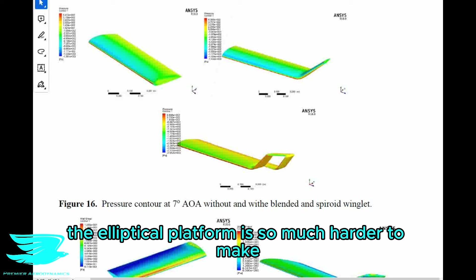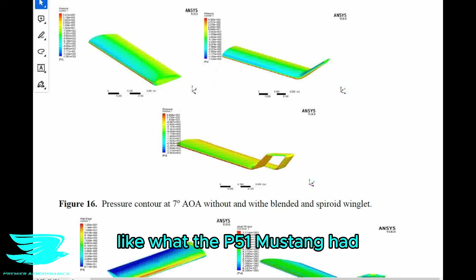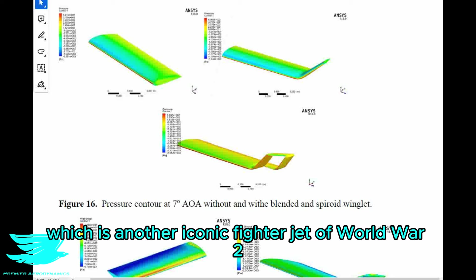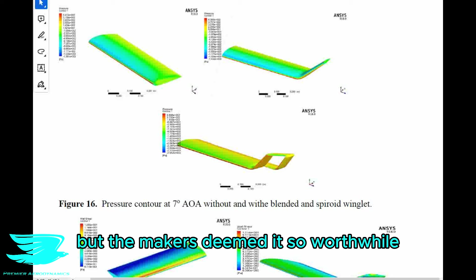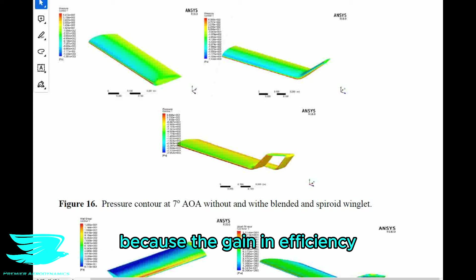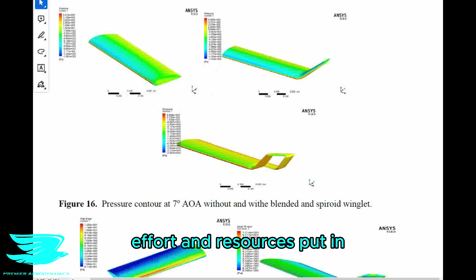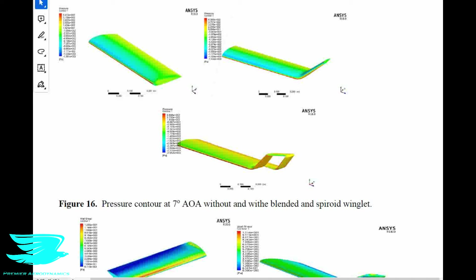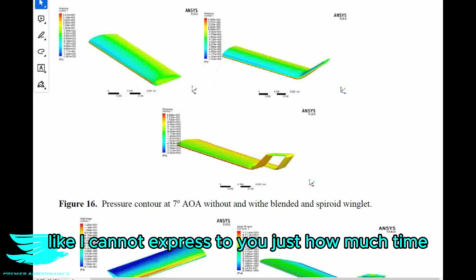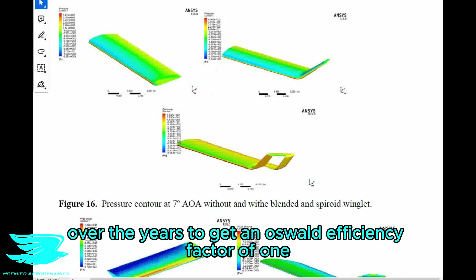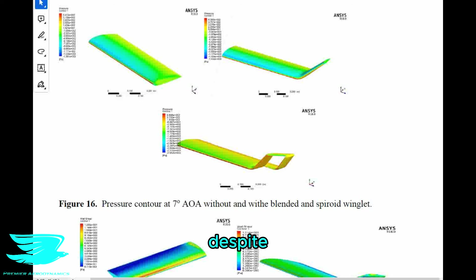The elliptical planform is so much harder to make than a straight one, like what the P-51 Mustang had — which is another iconic fighter jet of World War II. But the makers deemed it so worthwhile, because the gain in efficiency due to the lower induced drag was worth the time, effort, and resources put in to get an elliptical planform — or more accurately, an elliptical lift distribution. I cannot express to you just how much time, effort, and resources were put in over the years to get an Oswald efficiency factor of 1, despite just how much harder it is to do.